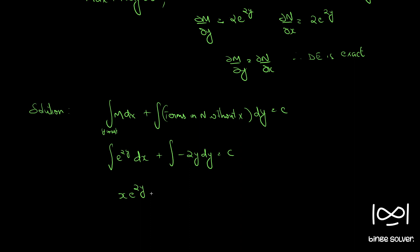So we get x into e raised to 2y minus y squared equals c. This is the solution to question number 191.